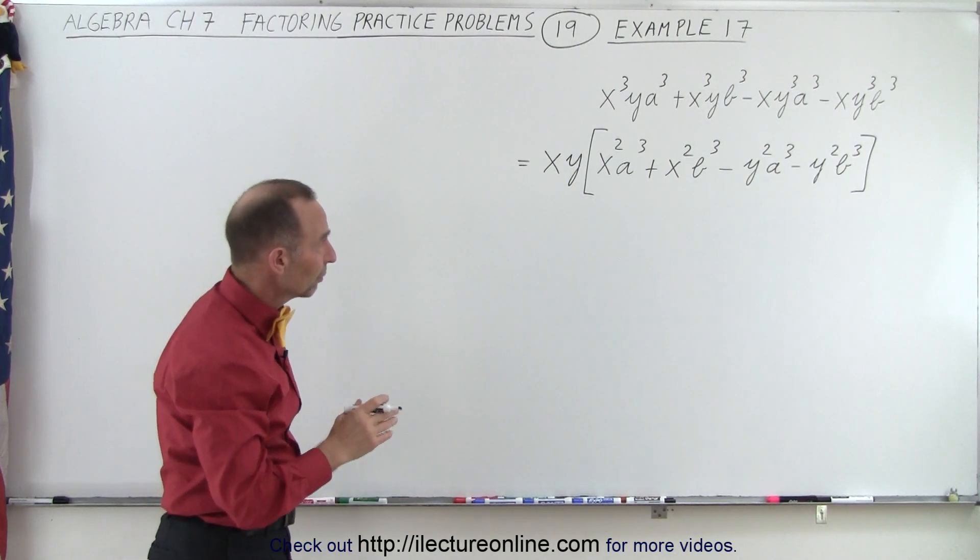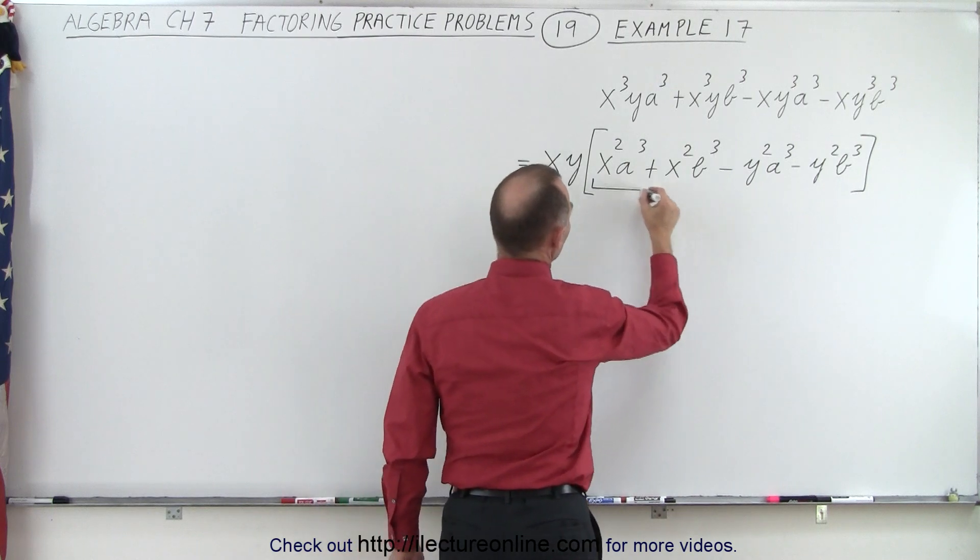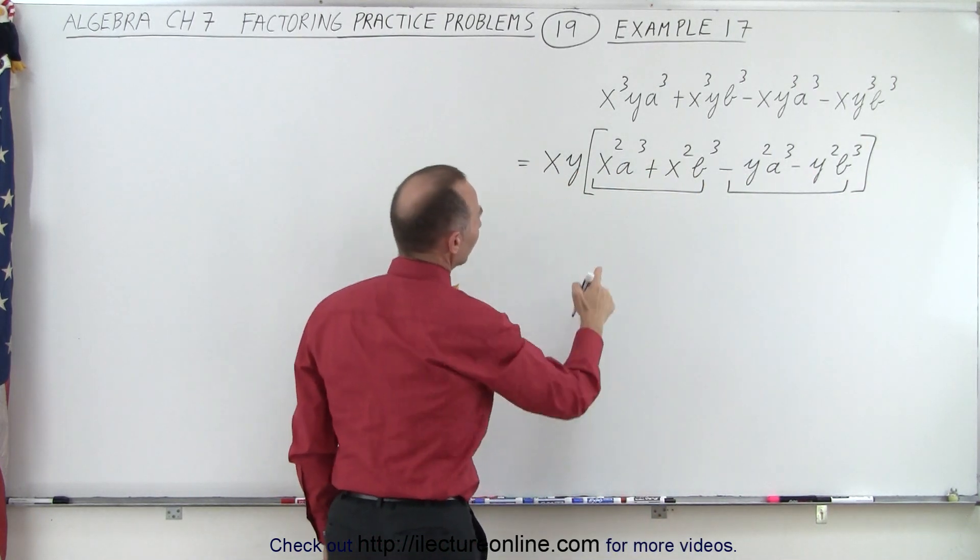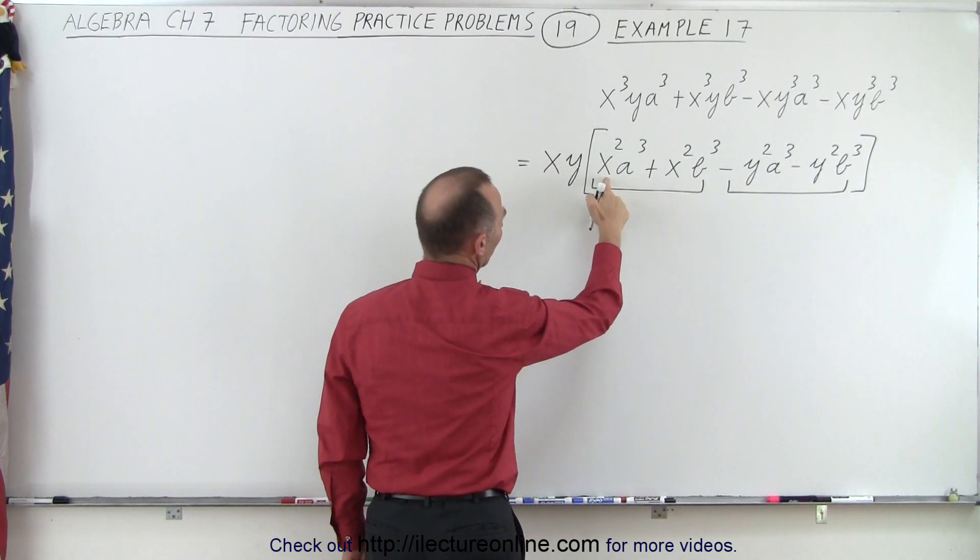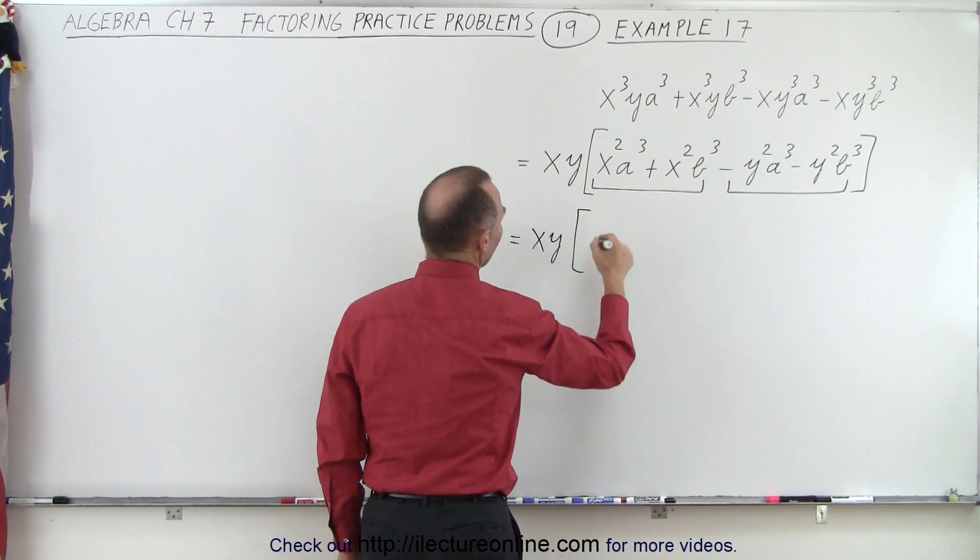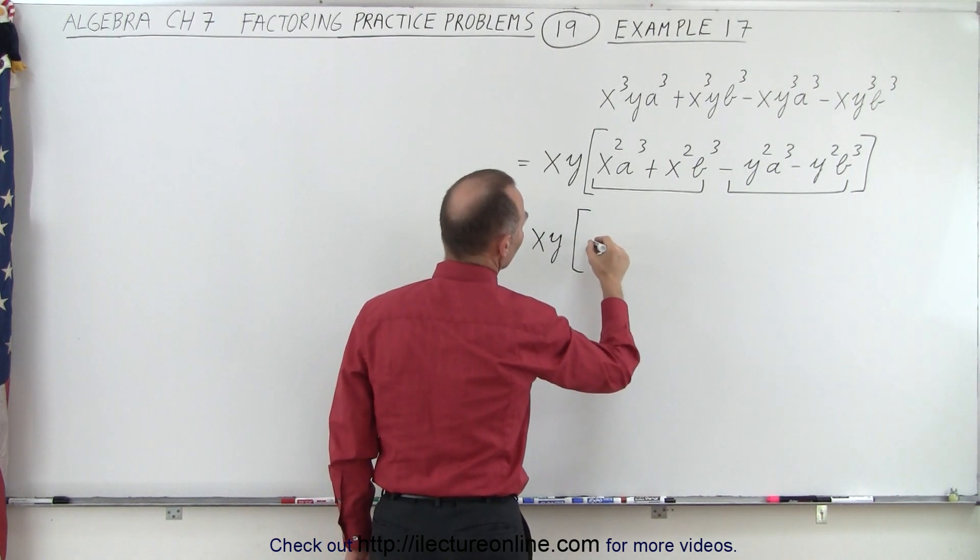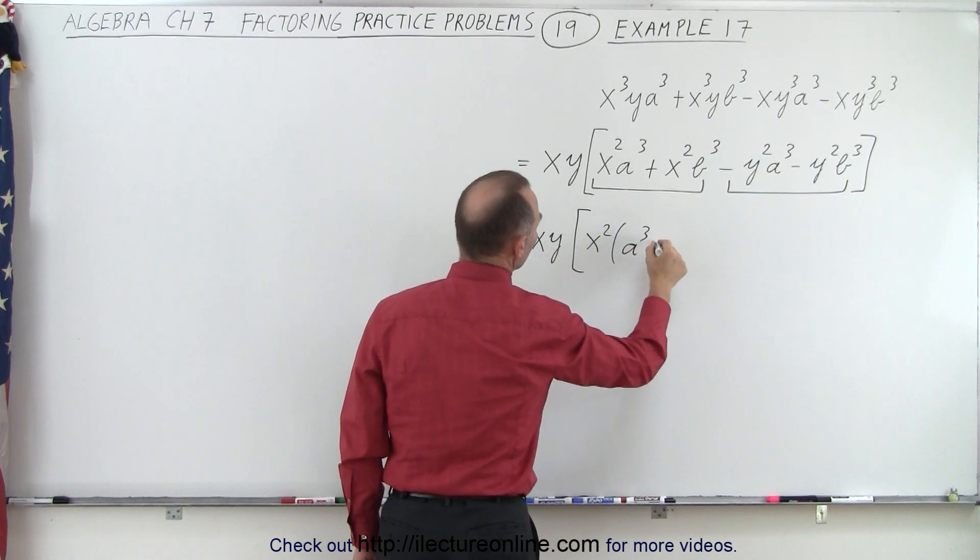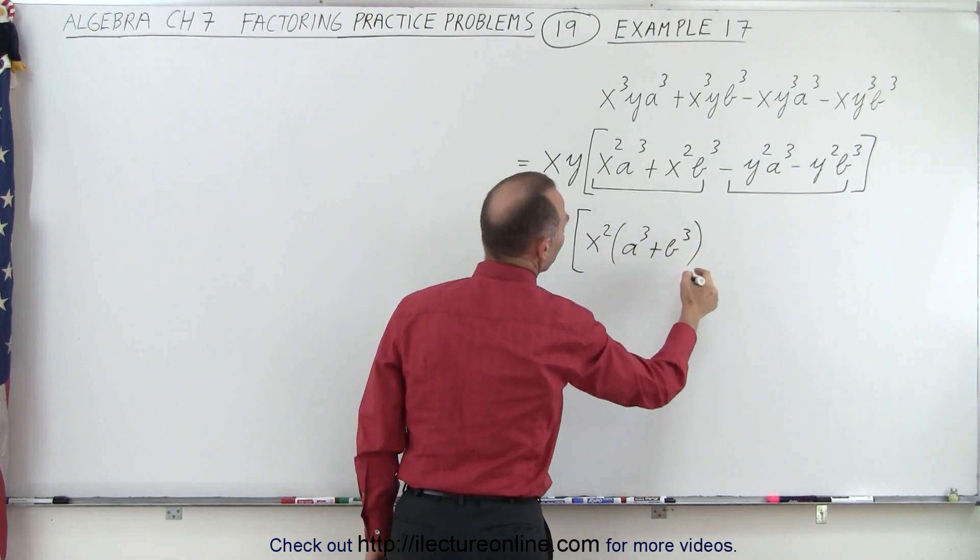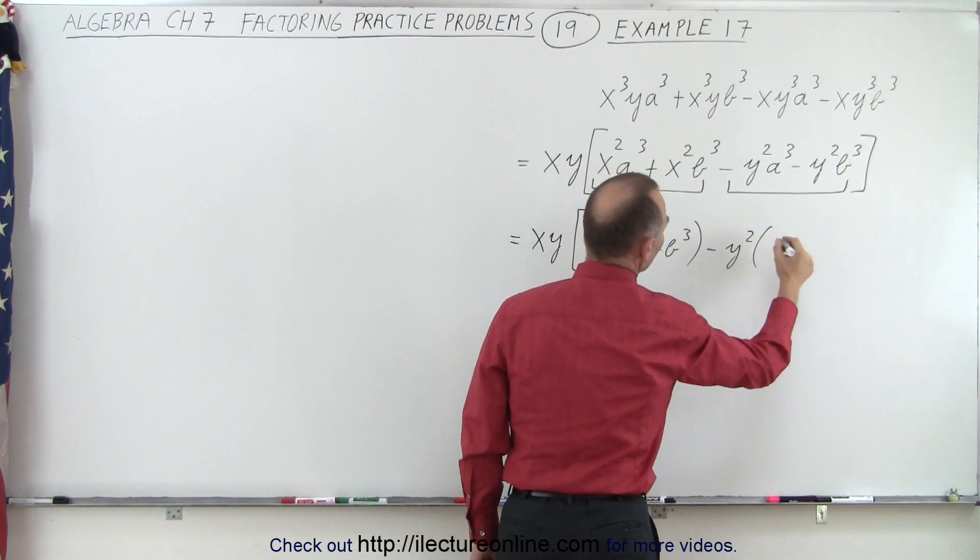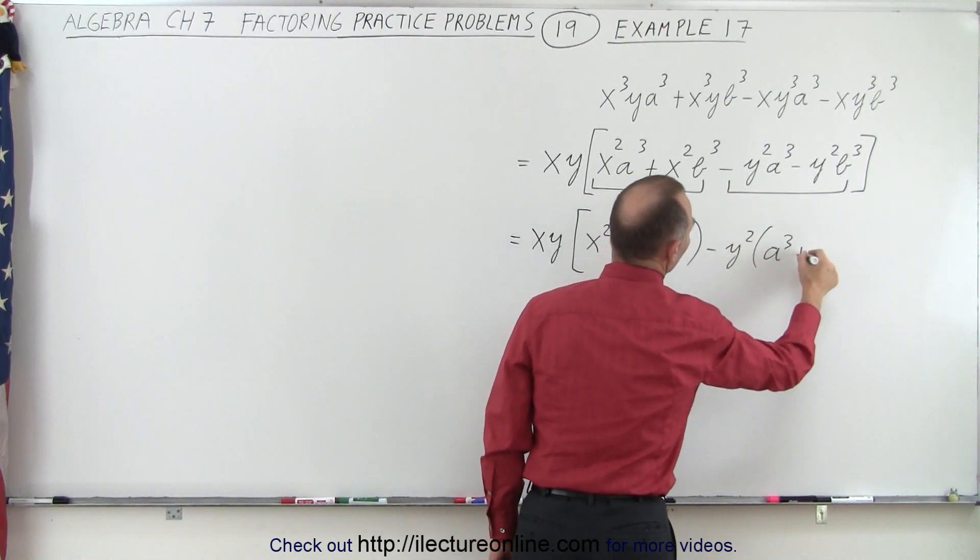Now what we're going to do is we're going to group them in groups of two and see if there's something common here. On the first group of two terms, we notice that x squared is common, so we can factor that out. So we have an x times y, and that gives us a common factor of x squared times a cubed plus b cubed. And here the common factor would be a minus y squared that leaves us with an a cubed plus b cubed.